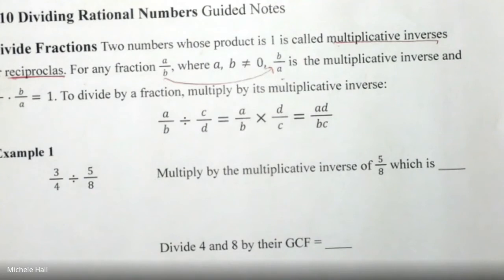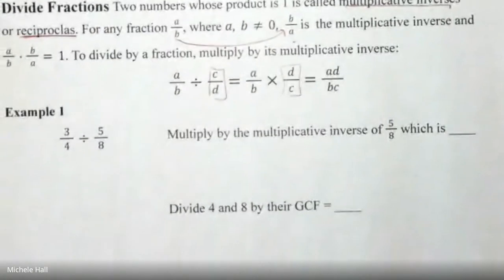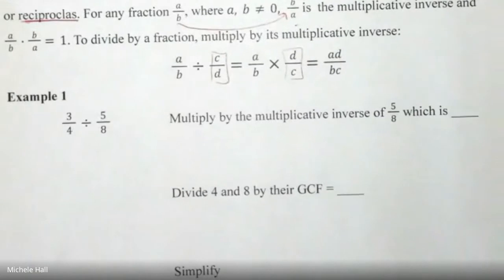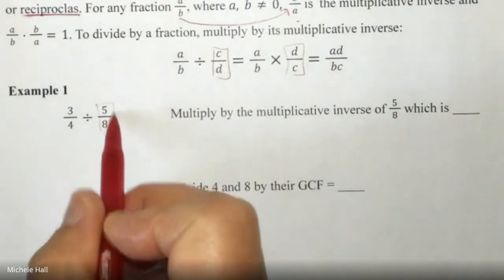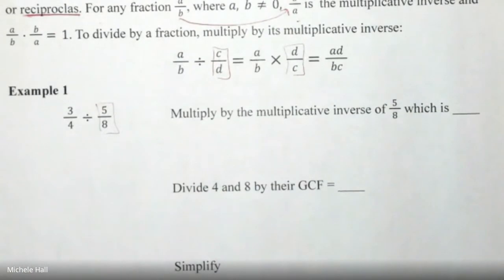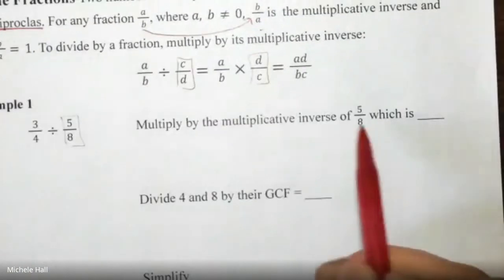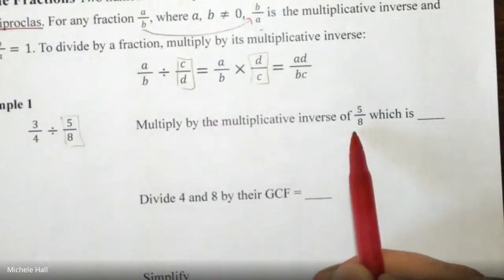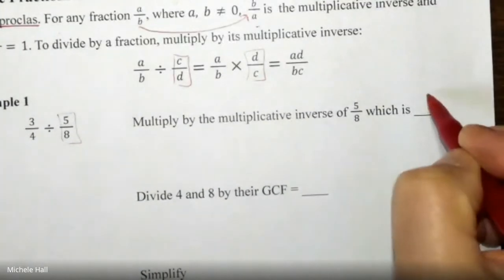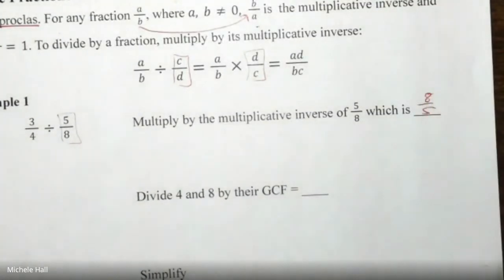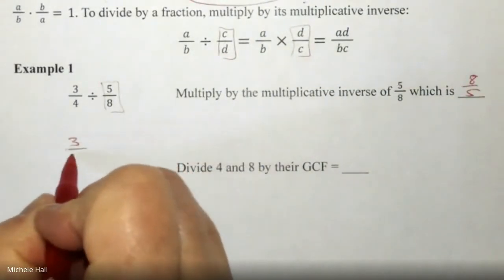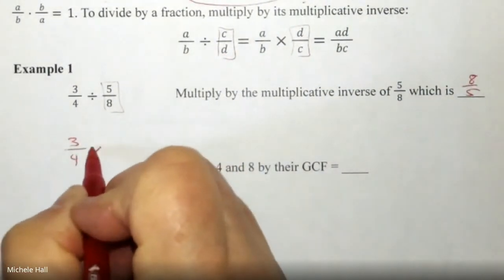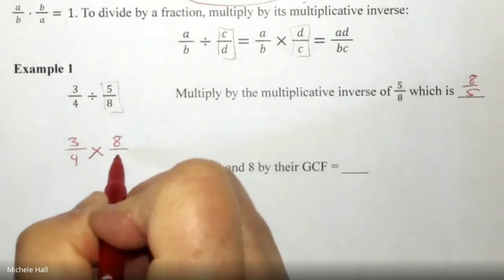Dividing fractions using the reciprocal. Example one: multiply by the multiplicative inverse of five-eighths. You're always looking at the second fraction, never the first fraction. What is the multiplicative inverse of five-eighths? There you go, it's eight over five. So we have three-fourths, it changes to multiplying when you flip it, and it becomes eight-fifths.